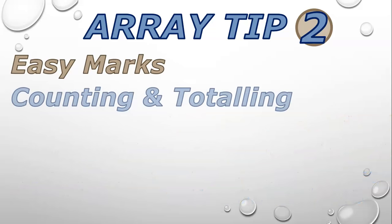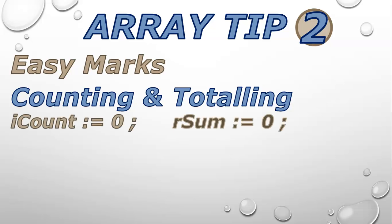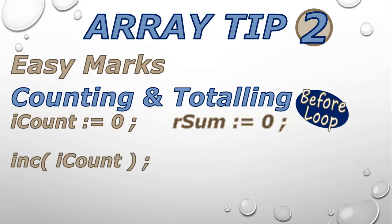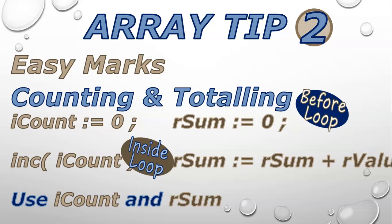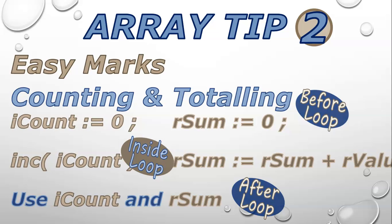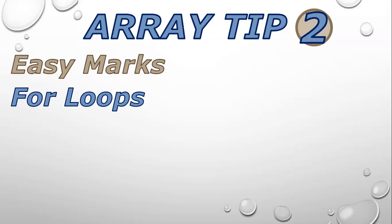You can also get easy marks from counting or totalling. Whenever there is a count or a sum, use these three steps: first, initialize your count variable and sum variable before the loop starts. Then, within the loop, increment the count or add a value onto your sum variable. Third, after the loop, use those variables to display or use within a calculation. And if you are doing a loop through a 2D array, you know there's going to be a nested loop.